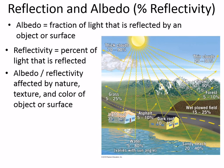The reflectivity or albedo of an object depends not only on its color — something dark has low reflectivity, something white has high reflectivity — but also on the nature of the surface. Water is a good example: you can get a terrible sunburn out fishing because water is very reflective, but depending on the angle of the sun, it can be not very reflective at all. A region that warms strongly warms the air above it, causing convection.